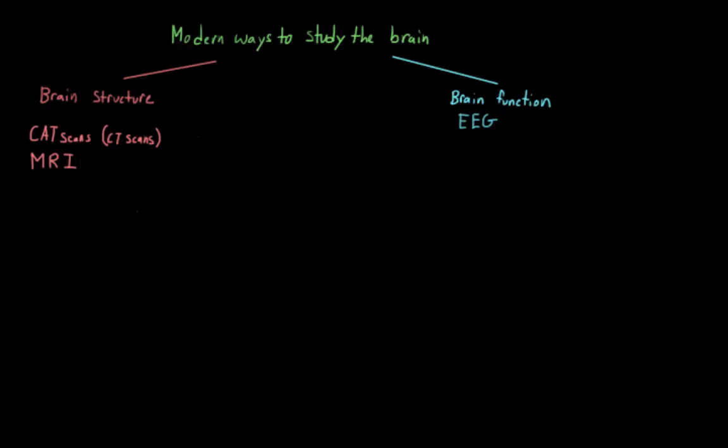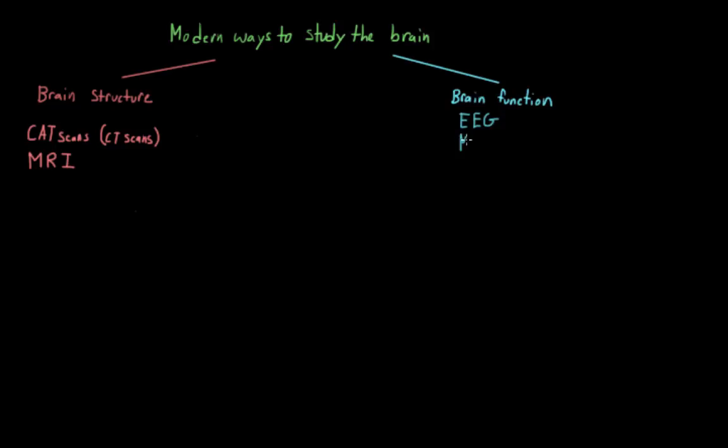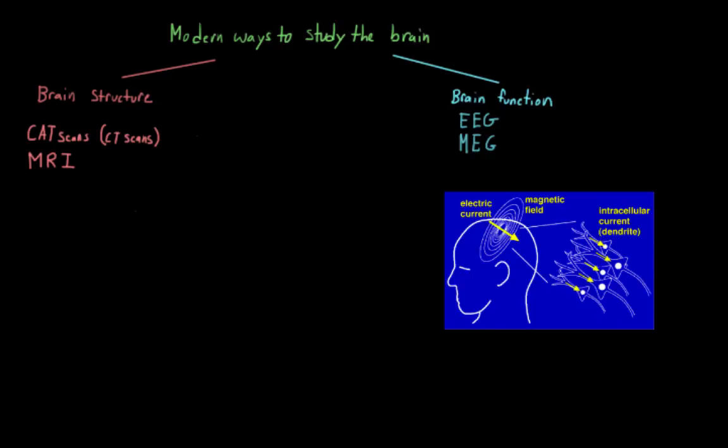Another type of functional recording is magnetoencephalography, or MEG. This records the magnetic fields that are produced by the electrical currents in the brain. I don't mean to give you too many acronyms, but these magnetic fields are measured using superconductive quantum interface devices, which are also known as squids. This technique has a better resolution than EEG, but it is also a lot more rare, at least within the social sciences.